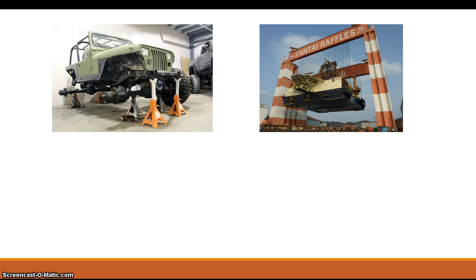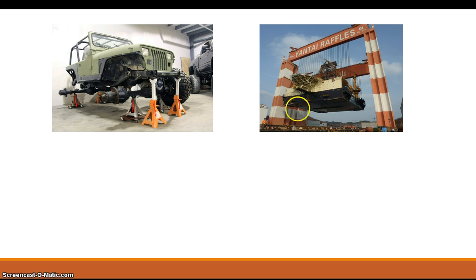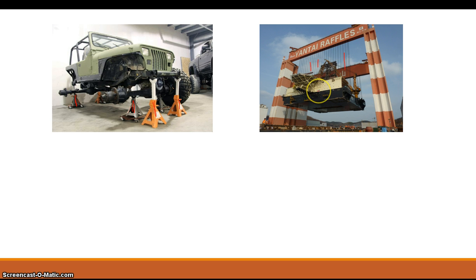I want you to look at these two examples. On the left you have a Jeep being held up on jack stands — there are at least four jack stands, one holding up what looks like an axle, two in the front, and one in the back. On the right side you have an overhead crane holding up what looks like a piece of a ship or some sort of big heavy piece of equipment, supported by a series of cables.